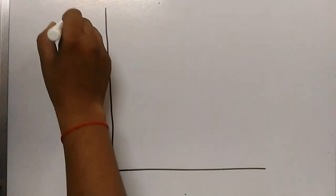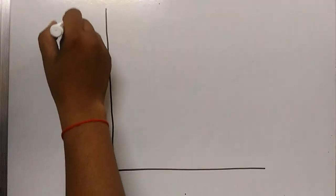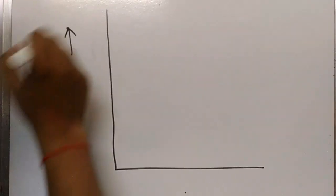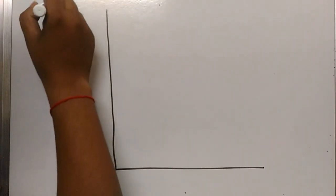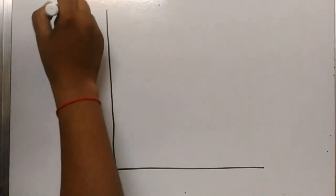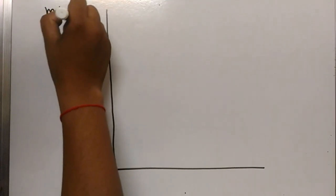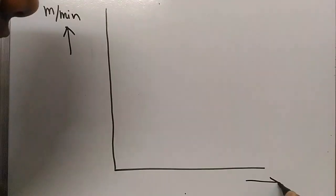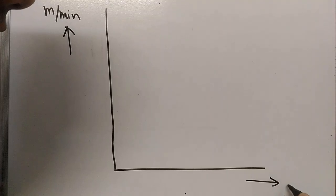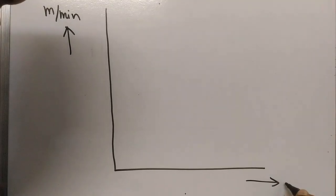Let us make a graph between maximum cutting speed and year of invention. The vertical axis shows maximum cutting speed in meters per minute, and the horizontal axis shows the year of invention of the material.